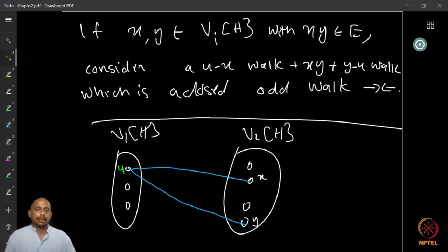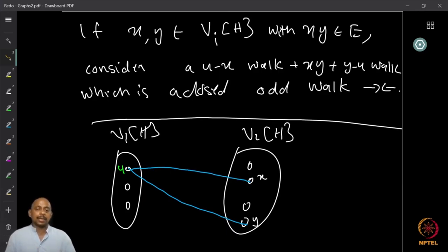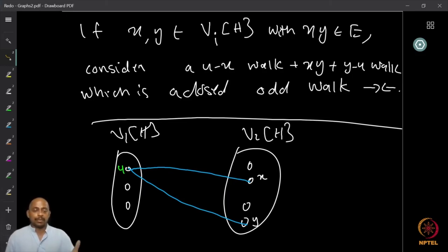Therefore V1 and V2 are both independent sets and form a bipartition of component H. For each component, I can get a bipartition this way. Having bipartitions of several components, I can combine them — placing V1 of one component with V1 of another, and V2 similarly — to get the full bipartition of the entire graph. This completes the proof that a graph is bipartite if and only if it has no odd cycles.